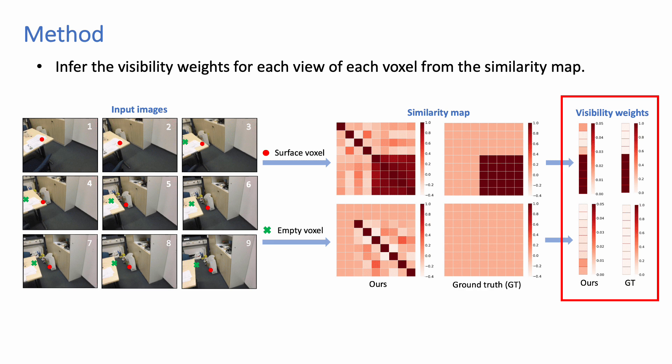Based on this observation, we propose to infer the visibility weights for each view of each voxel from the similarity map to better deal with the occlusion problem. By doing this, we could explicitly supervise the visibility learning and reject invisible views by assigning a near-zero fusion weight to these views.